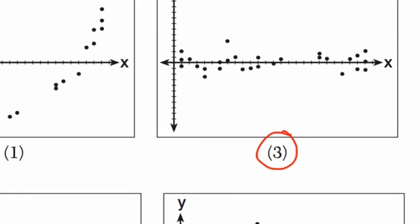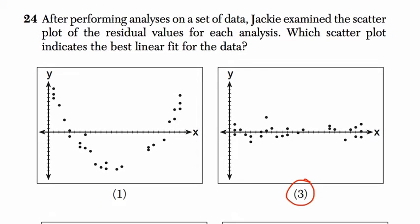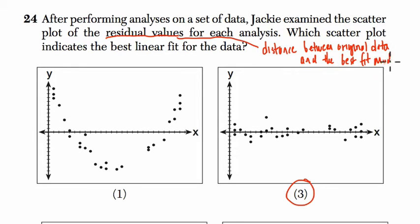But let's just back up and talk about what's happening here. So here we're looking at residual values, and what that is is the distance, the vertical distance between the original data and the line or the best fit model.